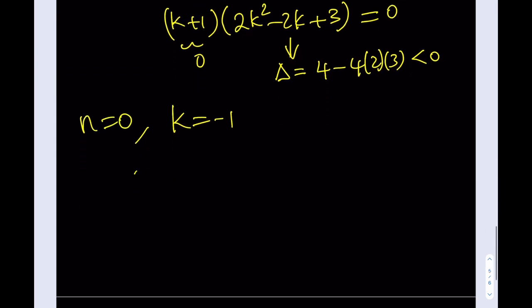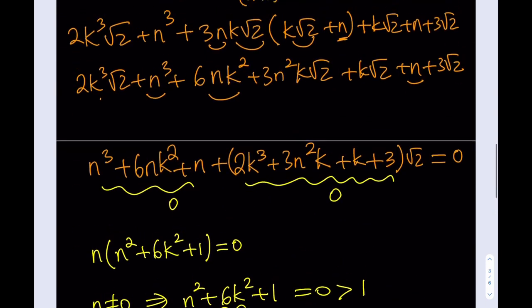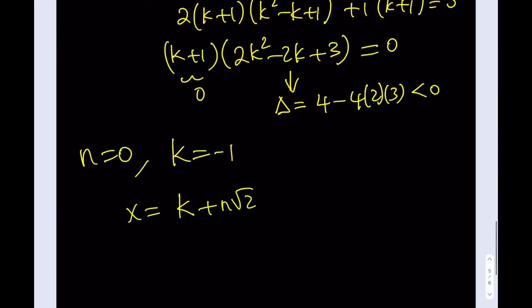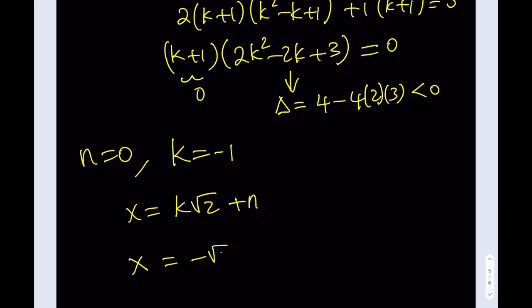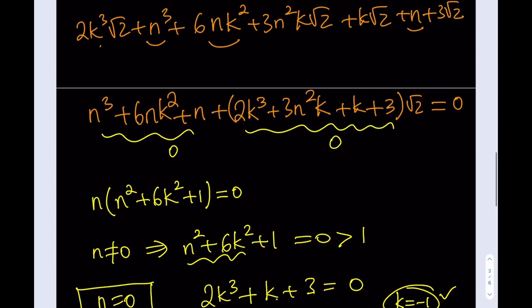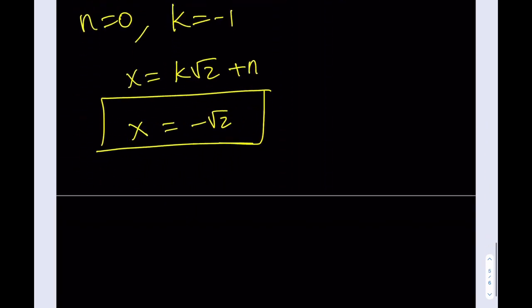With k equal to negative 1 and n equal to 0, our assumed form x equals k root 2 plus n gives x equals negative root 2. This is exactly the solution we found at the beginning by manipulating the constant term.